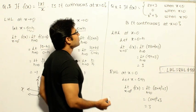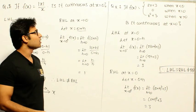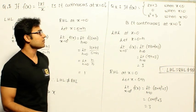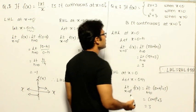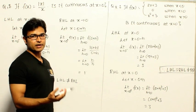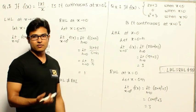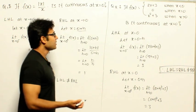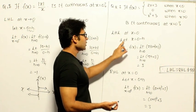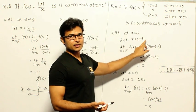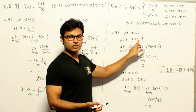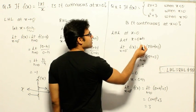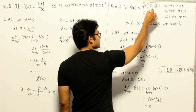Now look at this next example. f(x) = 2x + 3 when x < 0; f(0) = 0 at x = 0; and f(x) = x² + 3 when x > 0. Is this function continuous? We again use the left-hand and right-hand limit approach at the point x = 0, substituting 0 − h and 0 + h respectively. For the left-hand limit, since 0 − h is less than 0, we use the function 2x + 3.